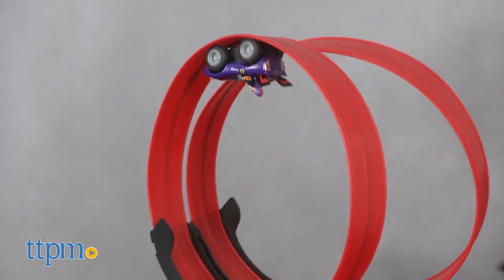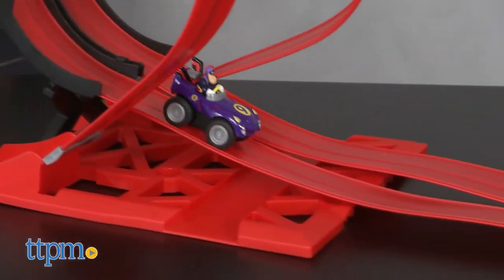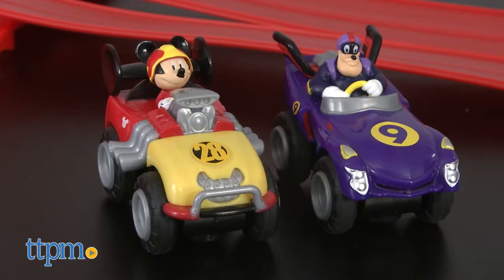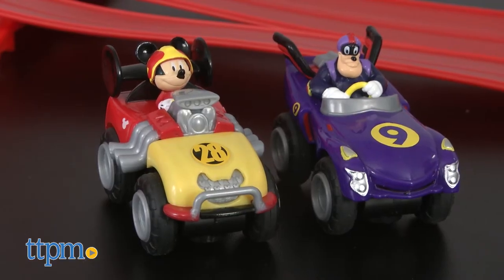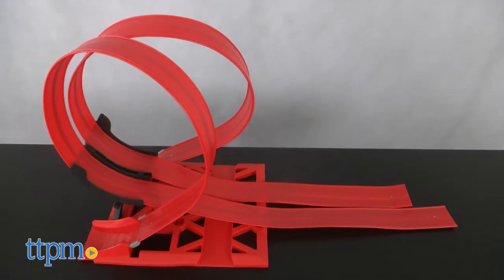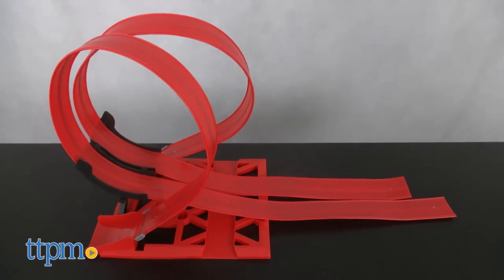Inspired by the Disney Junior animated series, this cool racing set features a double loop and comes with Mickey Mouse and Pete magnetic Roadster racer vehicles. Both the tracks and cars with figures attached are made of plastic.